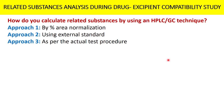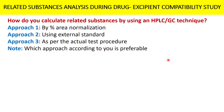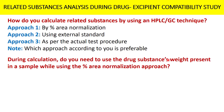A third approach is simply following whatever calculation approach is used in the API's test procedure for related substances. I have a question for you: which approach do you consider most accurate and preferable — approach one, two, or three? Type your answer in the comment box below. Also, when using percent area normalization (approach one), do you really need to know the weight of drug substance present in the sample?